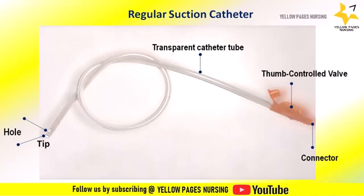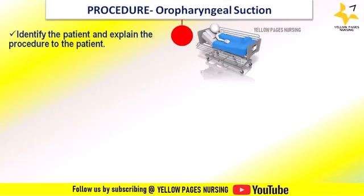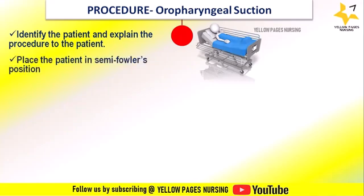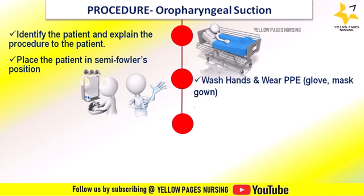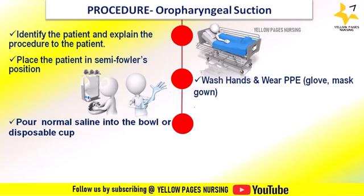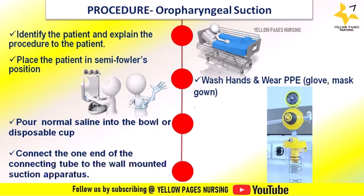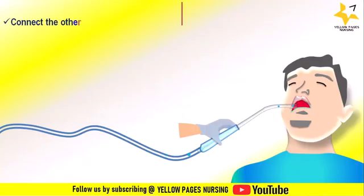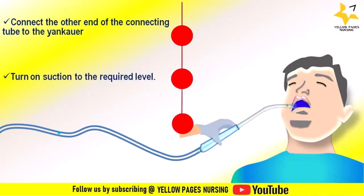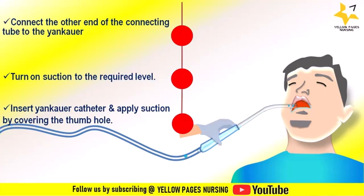In simple terms, the Yankauer suction catheter is a rigid suction catheter and the regular one is flexible. For the procedure: identify the patient and explain the procedure; place the patient in semi-Fowler's position; wash hands and wear PPE — gloves, mask, gown; pour saline into the bowl or disposable cup; connect the connecting tube to the wall-mounted suction apparatus and the other end to the Yankauer; turn on suction to the required level, maintaining pressure between 100 to 120 mmHg.